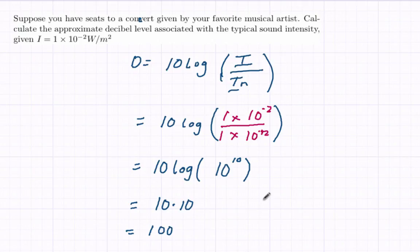The typical sound level on the front row of that rock concert is going to be 100 decibels. That's an example of using the application of a logarithm using decibel sound. If you have any questions or comments about how to use this formula, type them below. We'll see you next time.